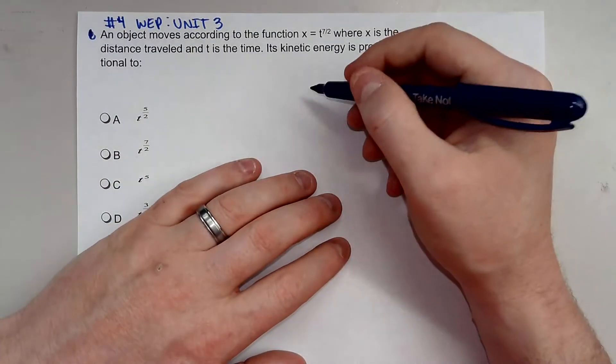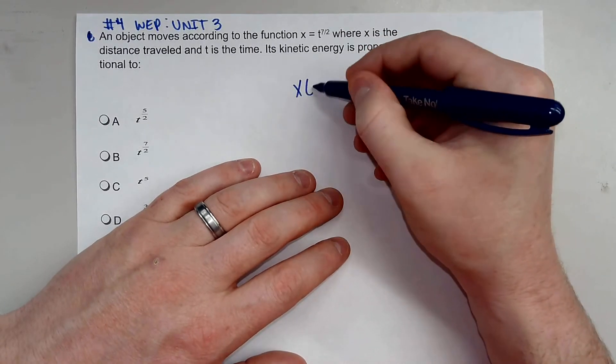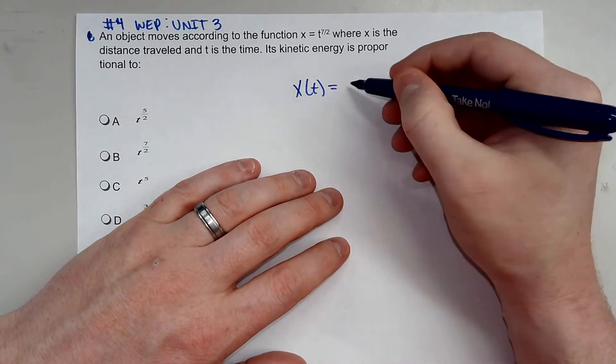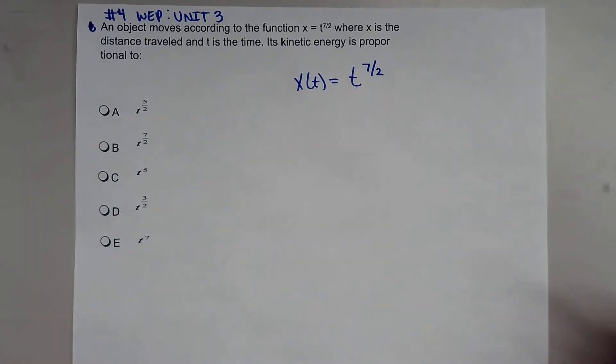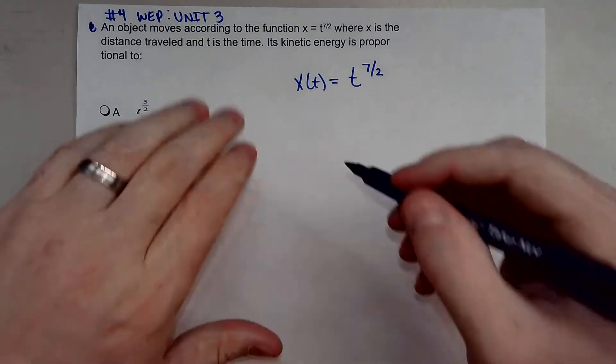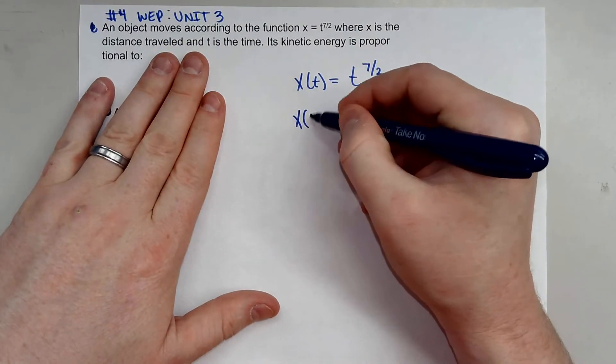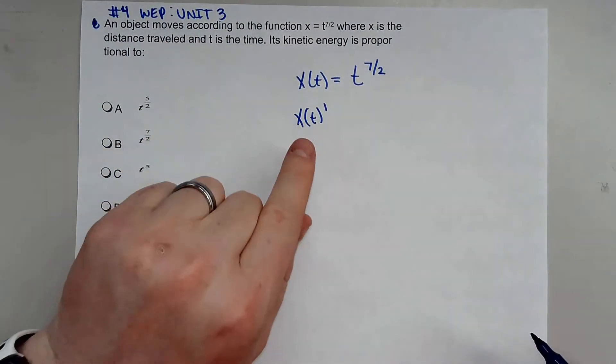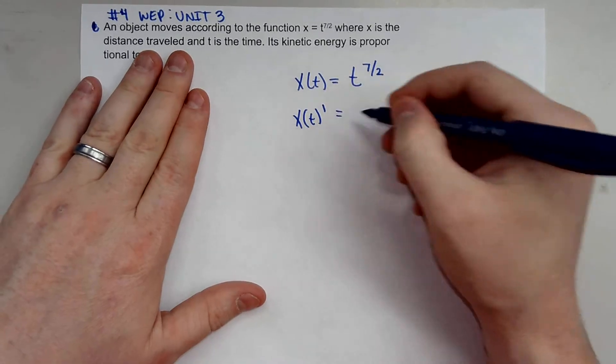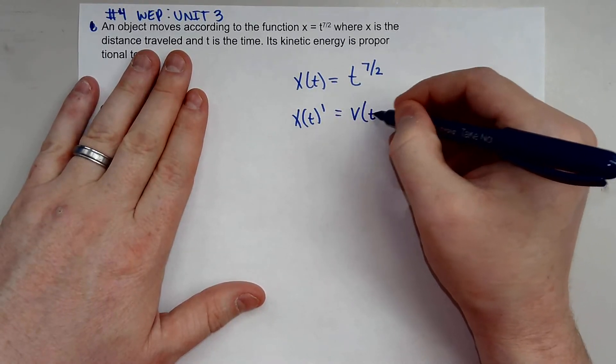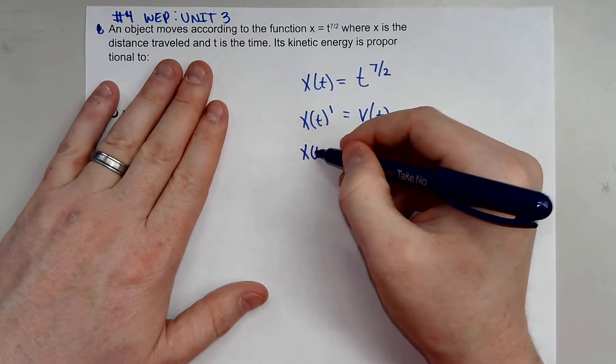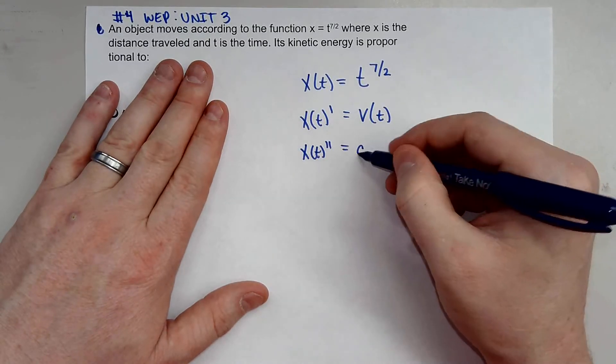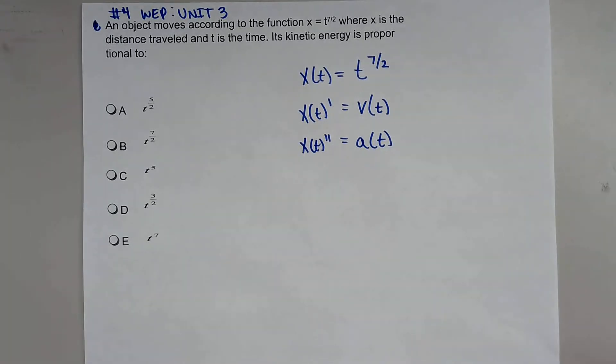Okay, so this is where we're going to have to use some calculus. It gives us a position function with respect to time, x(t) = t^(7/2). Now, we understand that in physics, the derivative of the position function with respect to time will give me a velocity function with respect to time. And the second derivative of a position function with respect to time will give me an acceleration function with respect to time.